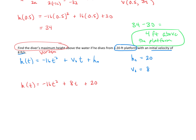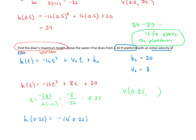To find the diver's maximum height, we find the vertex from standard form using x equals negative b over 2a. Our b value is 8 and our a value is negative 16. So we have negative 8 over 2 times negative 16, which is negative 8 over negative 32. Dividing that gives us a positive 0.25. That's the x-coordinate of our vertex, meaning that after 0.25 seconds, this diver will reach maximum height. We plug 0.25 into the function to find that height: negative 16 times 0.25 squared plus 8 times 0.25 plus 20.